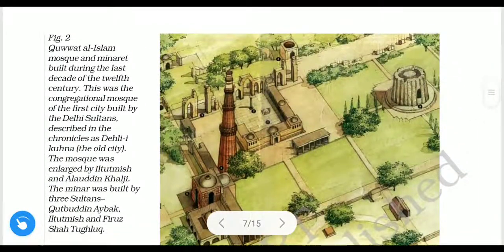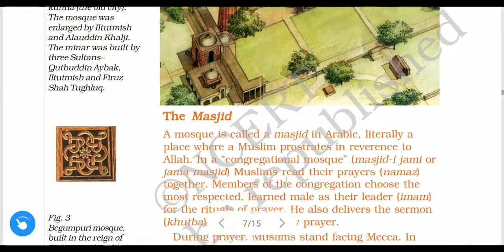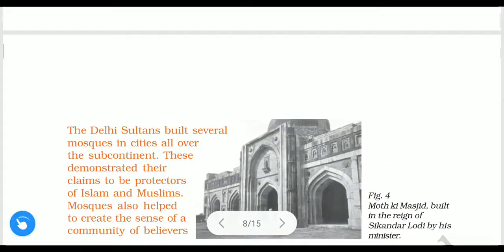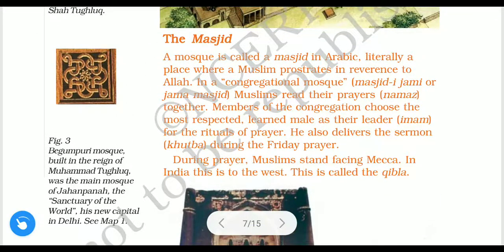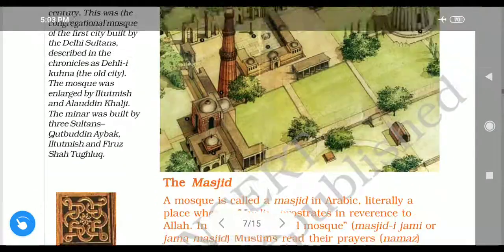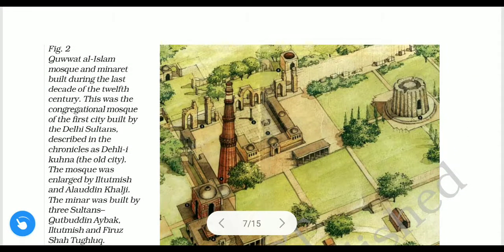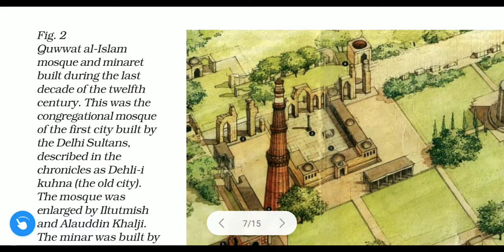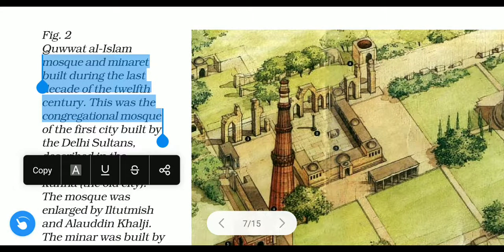Now we will discuss something about mosques — called masjid — during the Delhi sultanate. Here some figures and pictures are shown. One mosque shown is the Quwwat-ul-Islam mosque, where a minar was also built. It was built during the last decade of the 12th century.